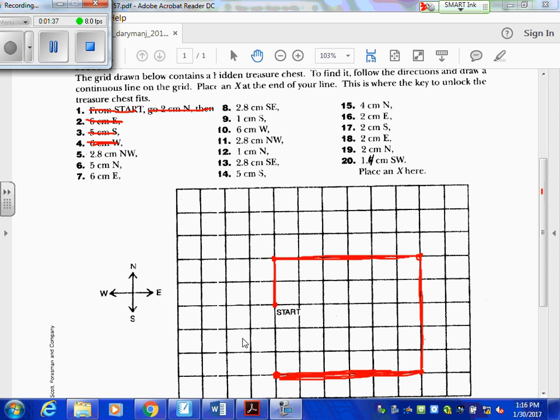Two 1.4s is 2.8. So, here's 1.4 to the northwest. Here's 2.8. That's done.